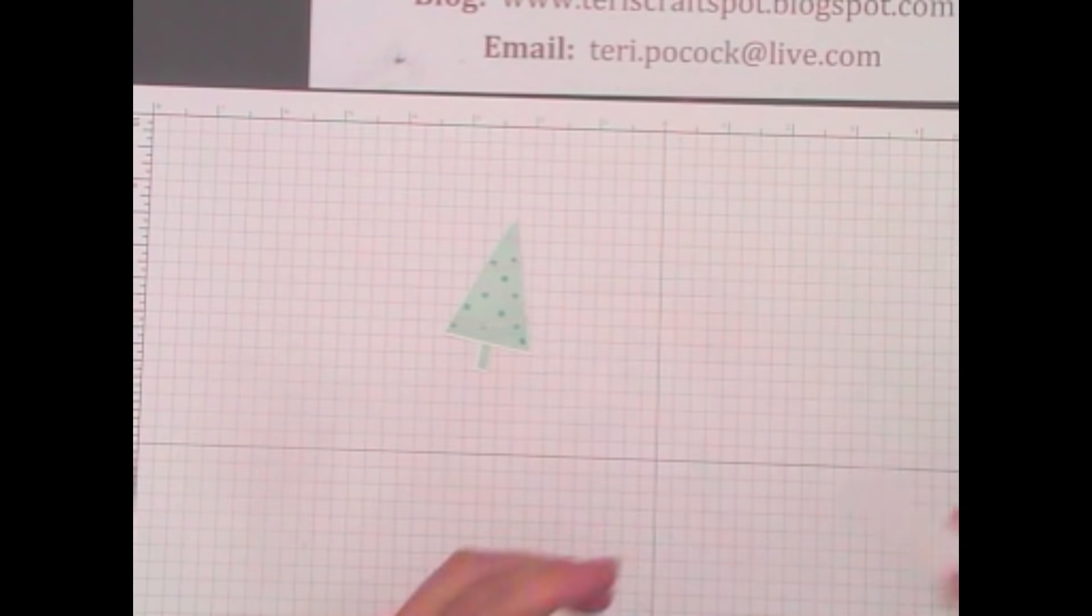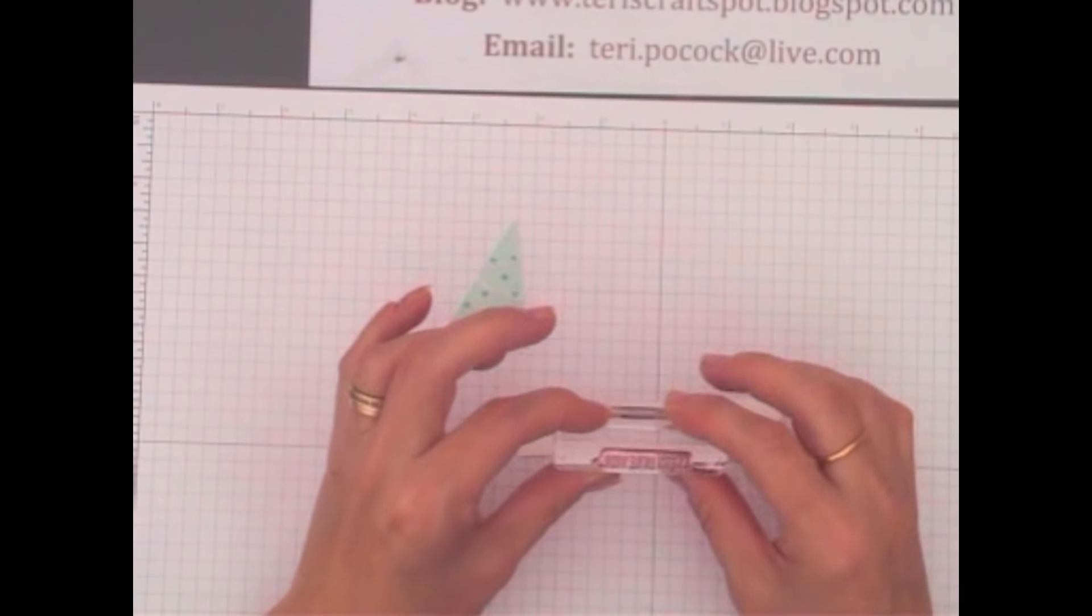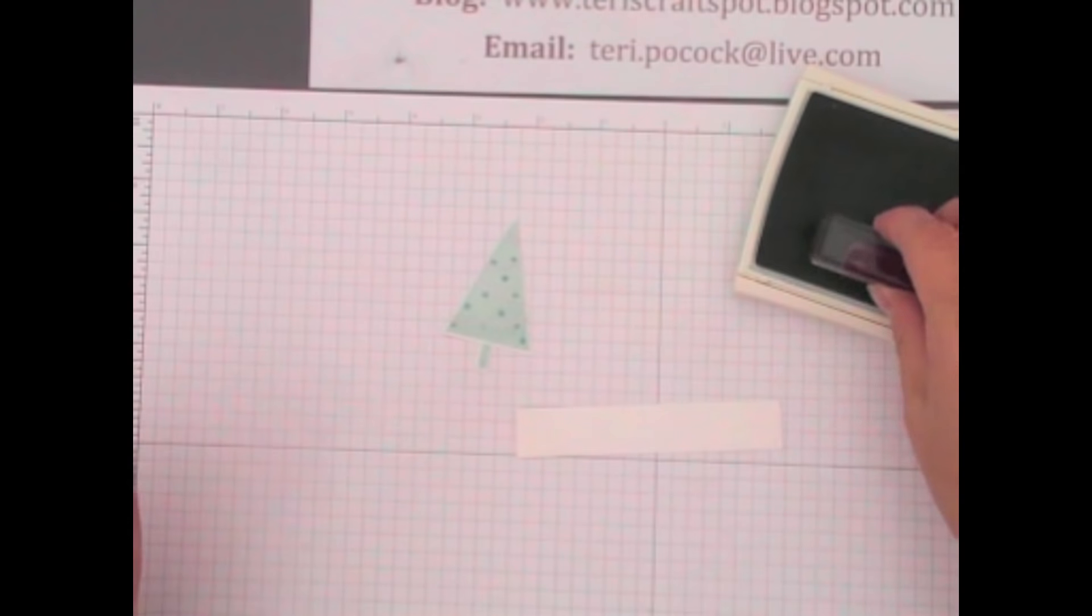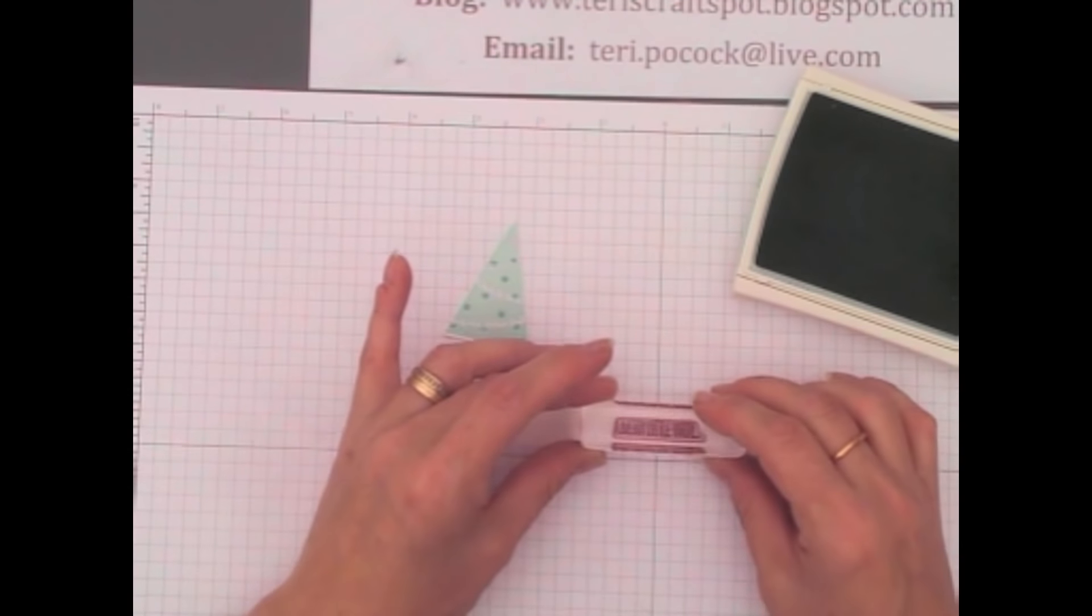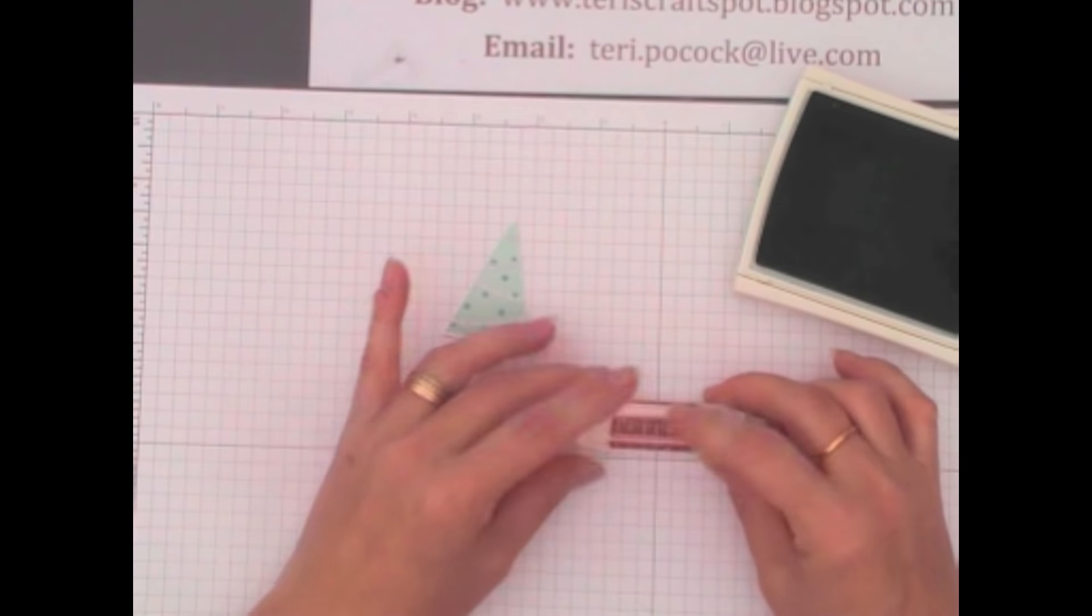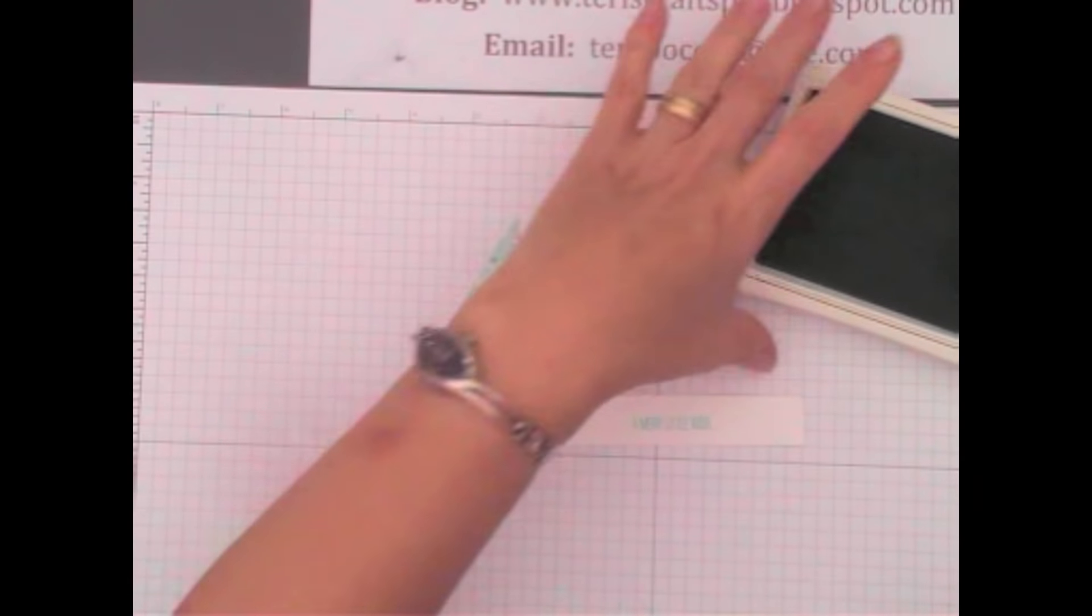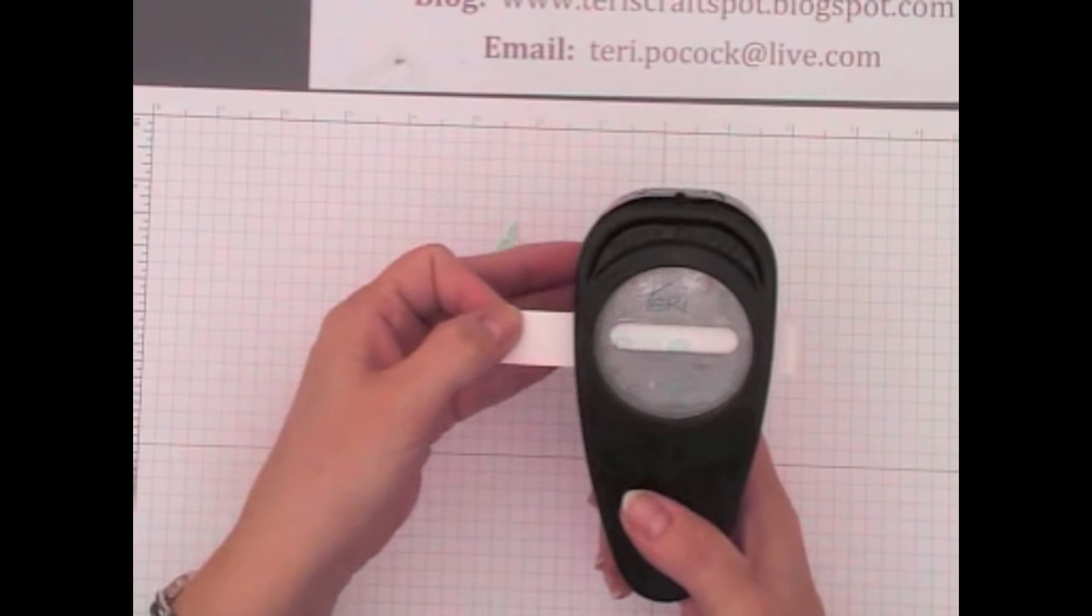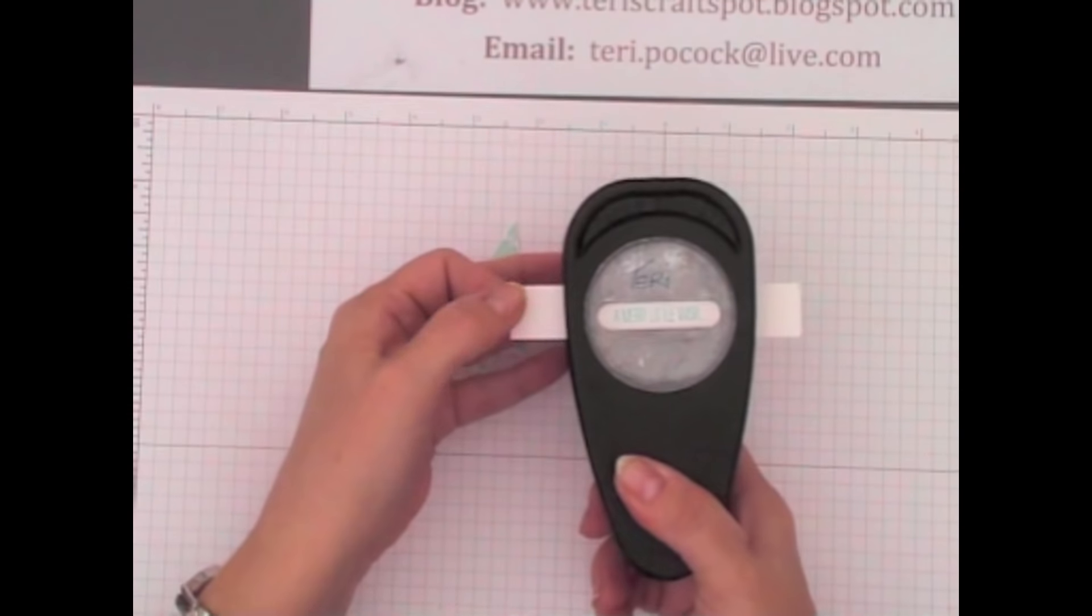Then I need to stamp a sentiment. So I'm using Merry Little Wish and I want Bermuda Bay ink again. Just ink him up and stamp him. And then this time I'm going to punch him out using a Word Window punch. There we go. Now I need to add dimensionals to the reverse.